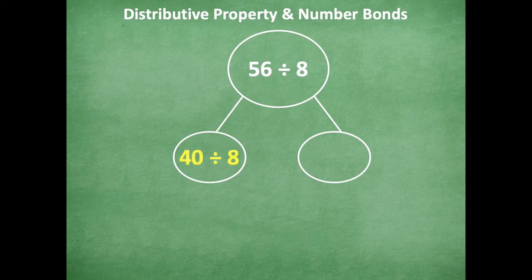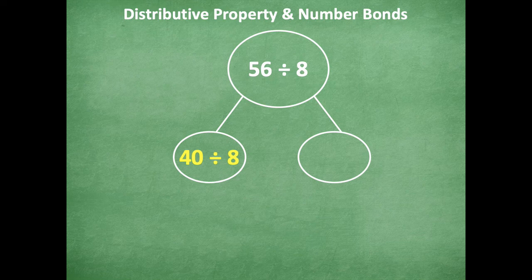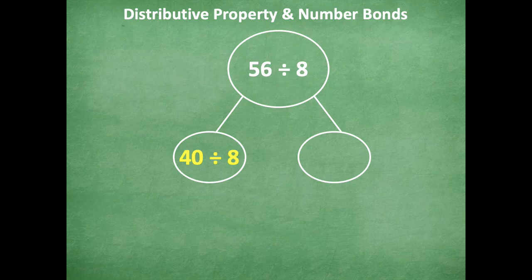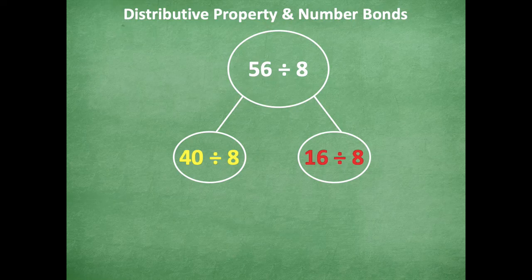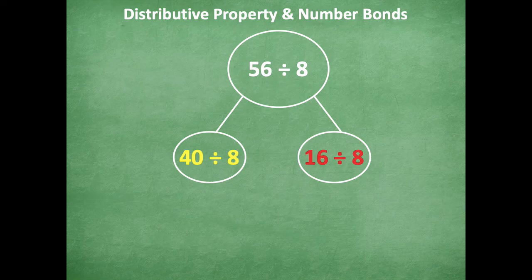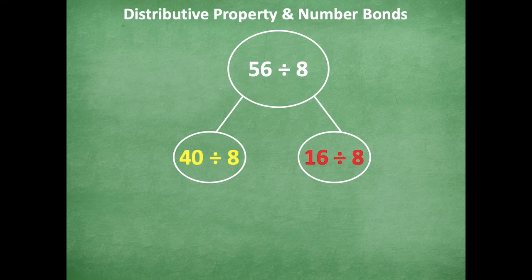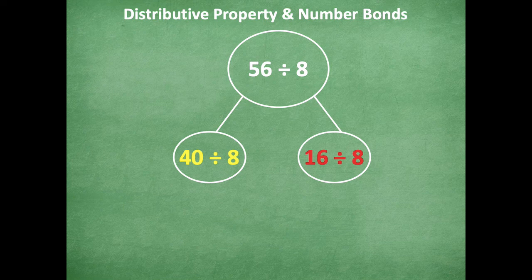All right, friends, so I came up with 40 ÷ 8 because that's a friendly fives fact. Then to come up with my other fact, I did 56 - 40, which is 16. So 16 ÷ 8. Those are the parts for your number bond. So now what I want you to do is if you don't have those, I want you to look at those two parts of the number bond. I want you to click pause and I want you to write out the equations that match that. So just like we did in the last part where we added those two parts together to be able to find the answer.